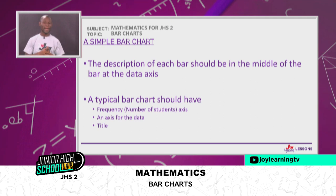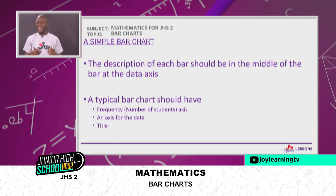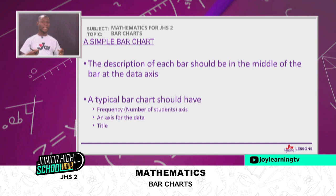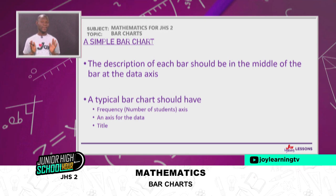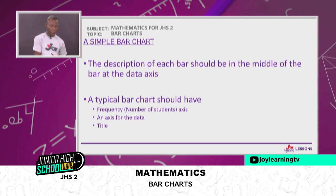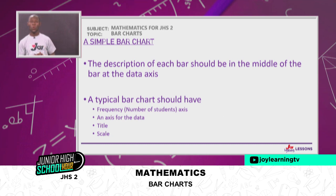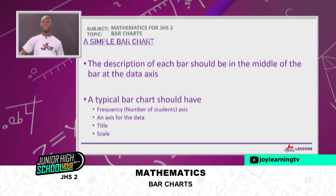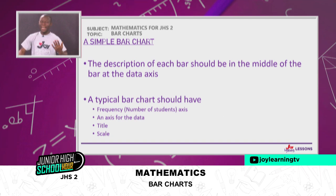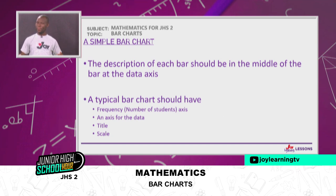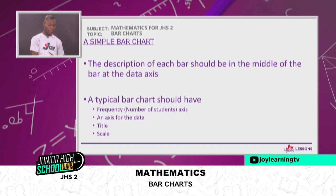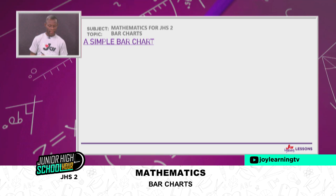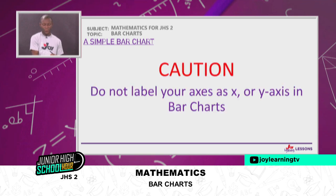Every bar chart you draw must have a title — for example, 'A bar chart showing the marks that students obtained in an exam', or 'A bar chart showing the heights of people in the class'. What the question or data is about, you have to title it appropriately so that anybody who sees your data knows what it's talking about. Then finally, it must also have a scale — for every two centimeters, what is it representing?